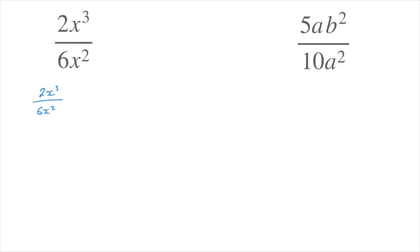Here's how that works. We can rewrite the numerator as a product of its factors. Indeed, when we write 2x cubed, it means 2 times x times x times x. And we can do the same on the denominator. When we write 6x squared, we can write 6 as a product of its factors.